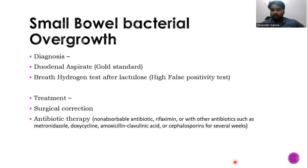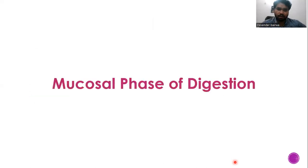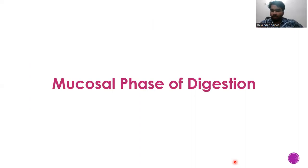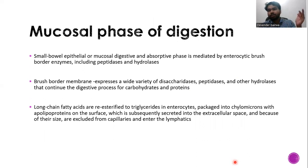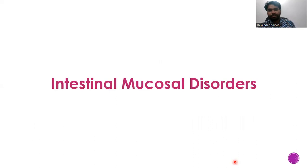So far we have discussed the luminal phase. Now we enter the mucosal phase of digestion — abnormalities in the mucosa of the gut. We have many mucosal enzymes continuing the digestion process that already started in the luminal phase.